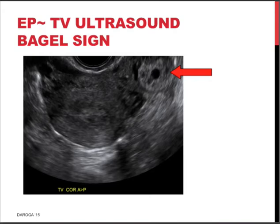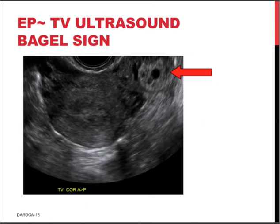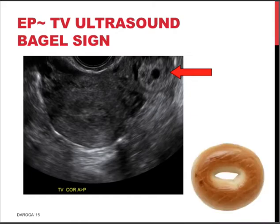The typical appearance is depicted here on a transvaginal scan. In the middle we see the uterus, and this is what we call the bagel sign or donut sign, which represents the ectopic pregnancy just outside the uterus, between the uterus and the ovary. When we visualize this bagel sign it is pathognomonic — it is proof for an ectopic pregnancy.